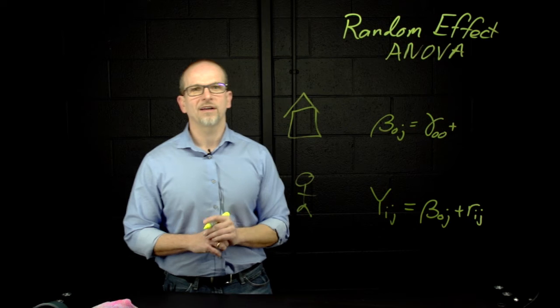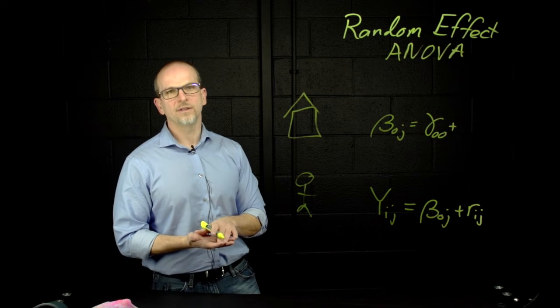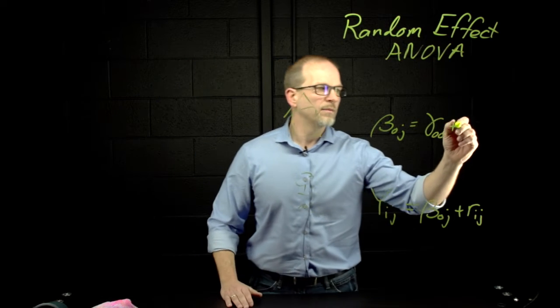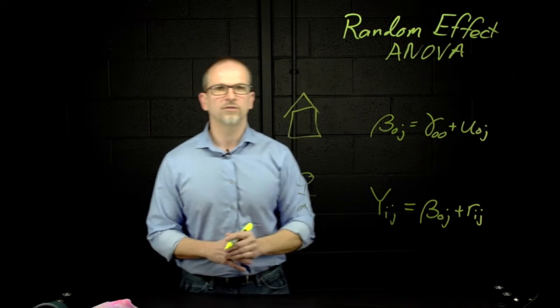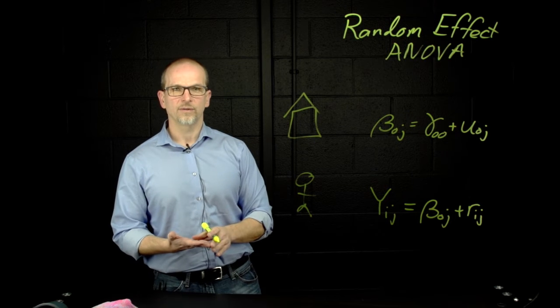In addition, we want to allow for the possibility that schools, their average math achievement is not going to be the same as the grand mean, meaning we will add in a u sub zero j, describing the extent to which the jth school has an average different from the grand mean.